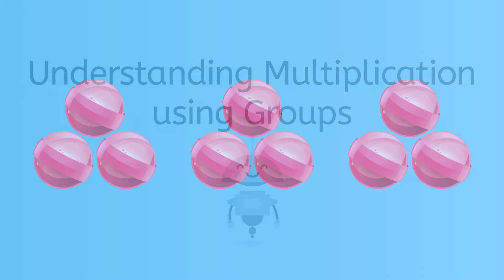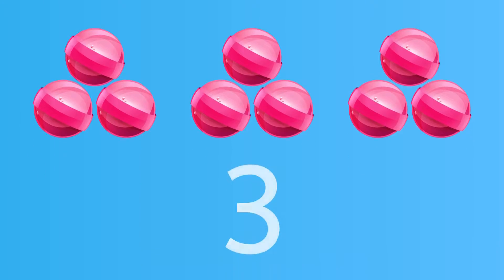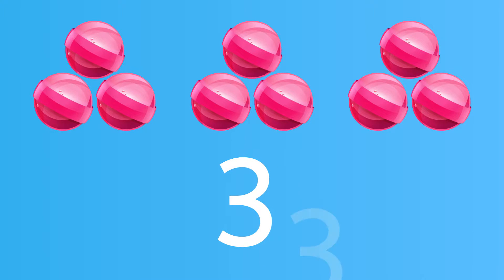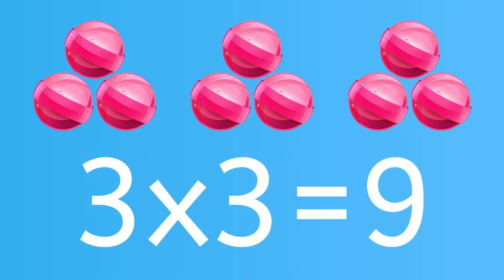Remember, numbers can represent things. For instance, here you see groups of 3 pieces of candy. How many groups do you see? There are 3 groups of 3 items. If you count the items, you'll see that 3 times 3 is equal to 9.